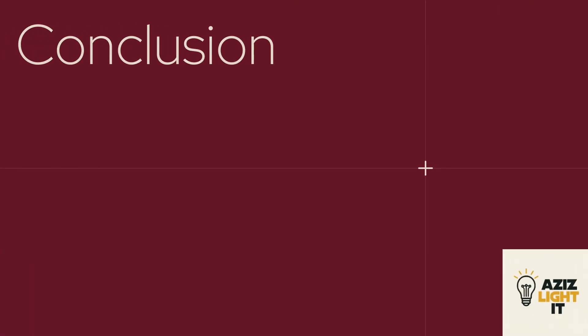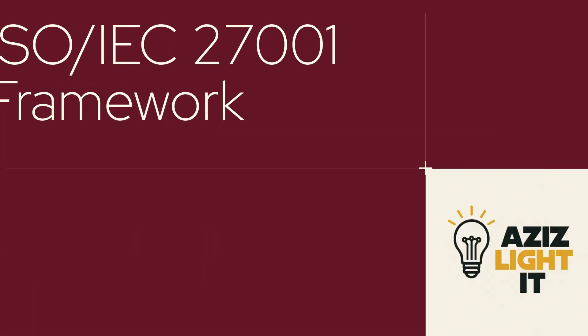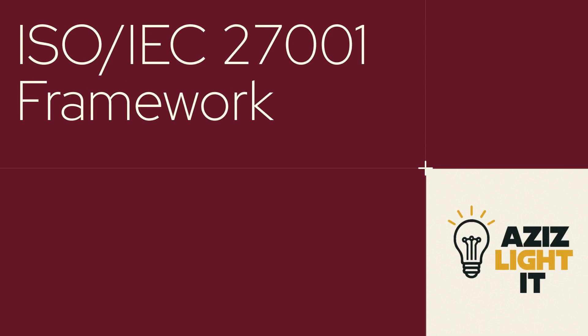Conclusion. ISO IEC 27001 is a powerful and structured framework that helps organizations implement a comprehensive ISMS to manage and protect sensitive information. By addressing risk management, implementing controls, and ensuring continuous improvement, ISO IEC 27001 enables organizations to secure their data, comply with legal requirements, and build trust with stakeholders. It is a vital tool for any organization looking to formalize and strengthen its approach to information security and cybersecurity.